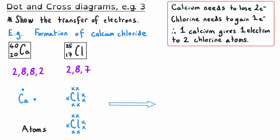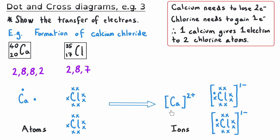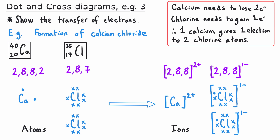One calcium atom gives one electron each to two chlorine atoms. At the end, we have one calcium ion and two chloride ions, all with full outer shells — calcium's outer shell is empty so its inner shell is now full, and the two chloride ions each have a full outer shell with seven crosses and one dot. Square brackets and charges are shown for all ions: the two chloride ions each have a 1− charge, and the calcium ion has a 2+ charge, having lost two negative electrons.